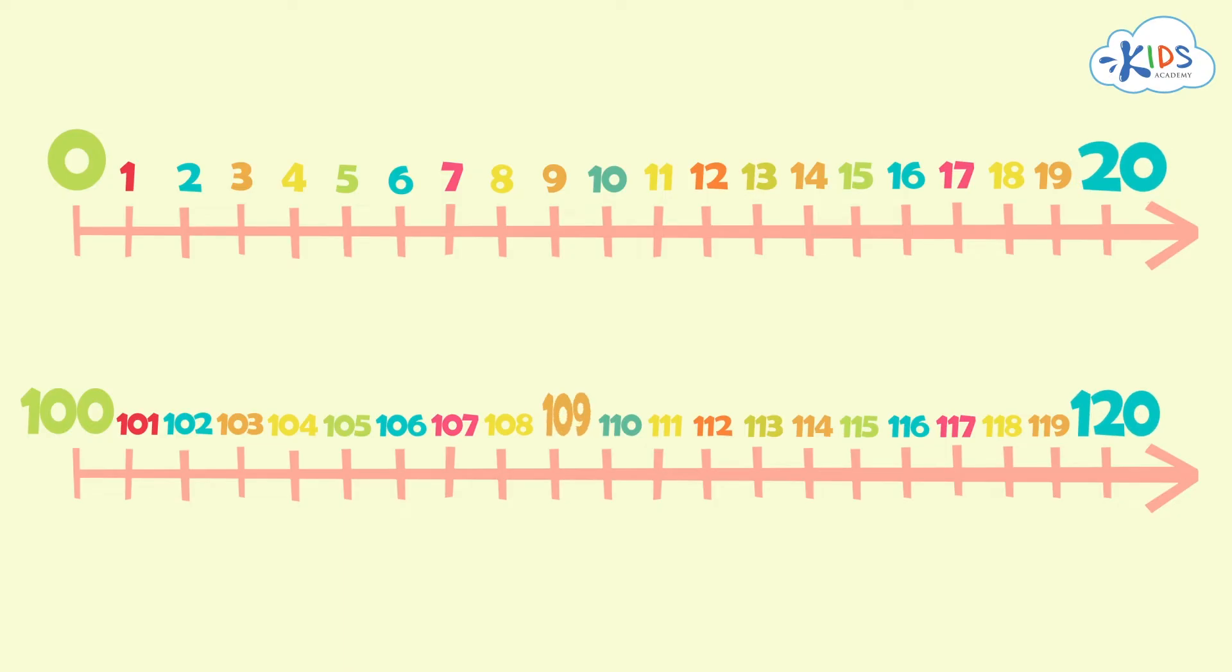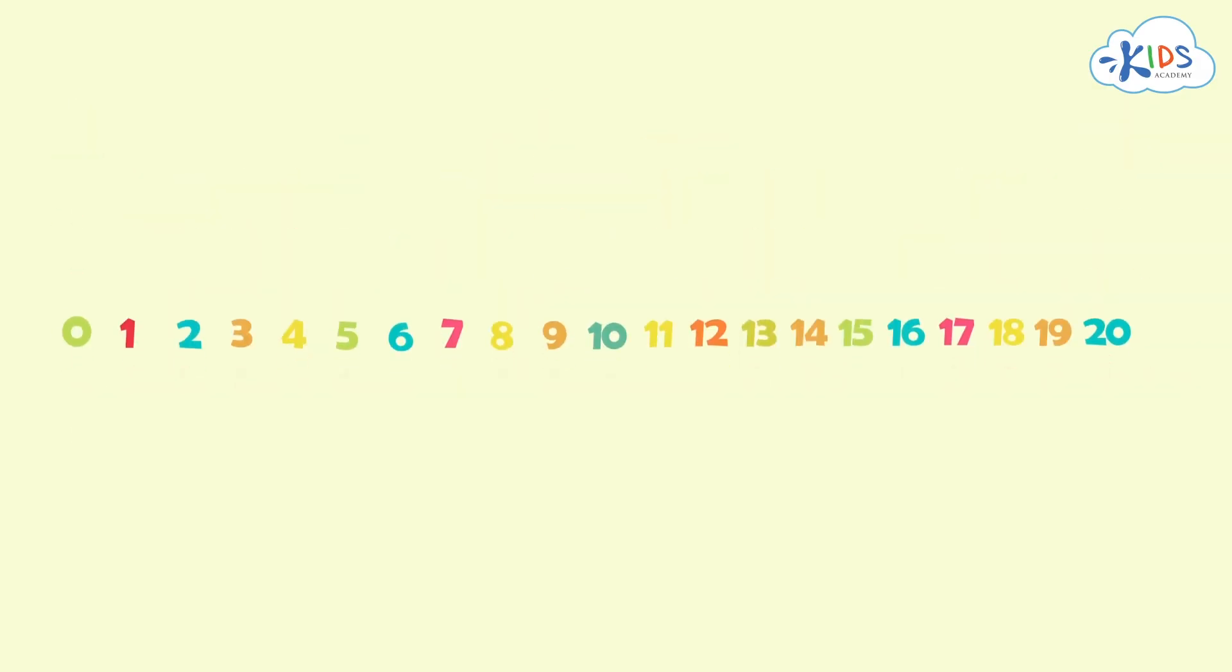Let's count from 109 to 120. We can follow the same pattern from when we count from 9 to 20. First, let's count from 9 to 20 to figure out the pattern. Then, we'll use that pattern to count from 109 to 120. Let's get started.